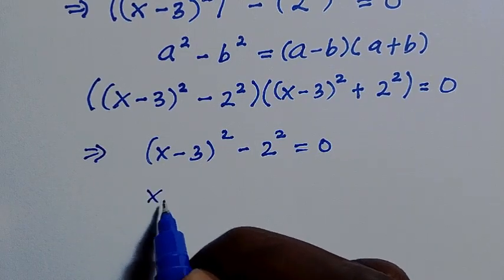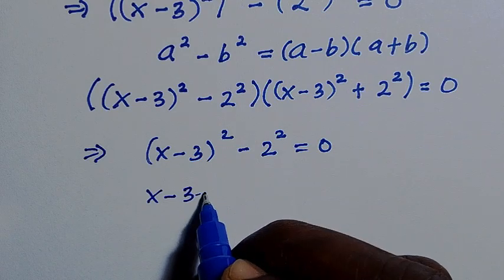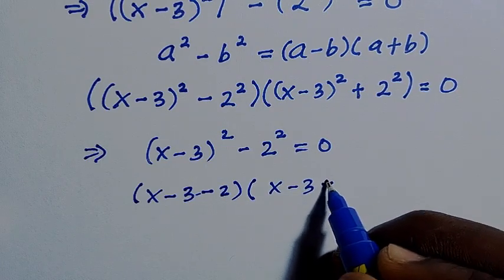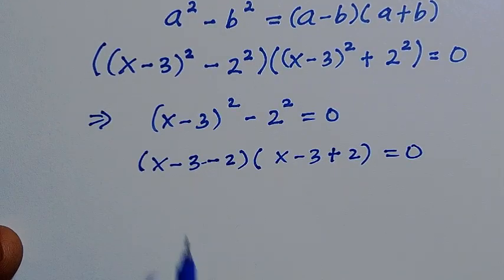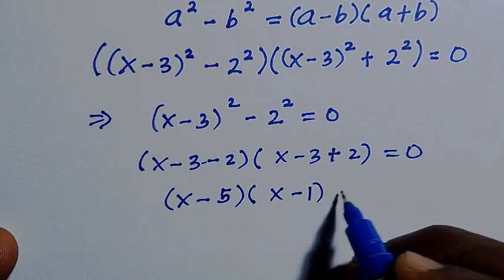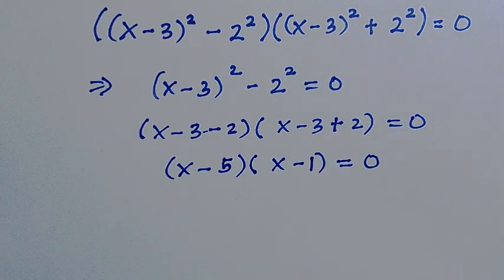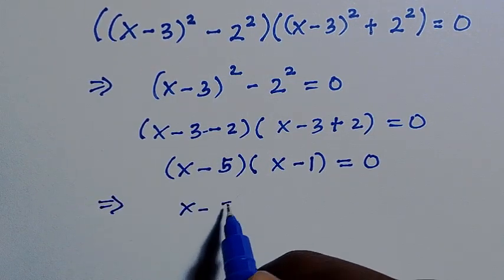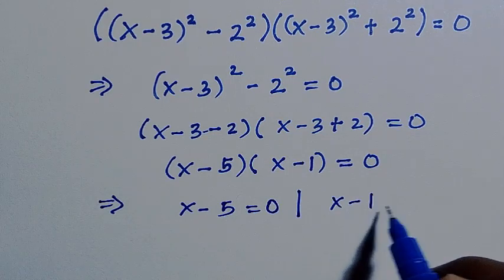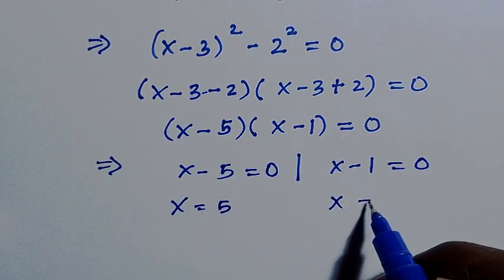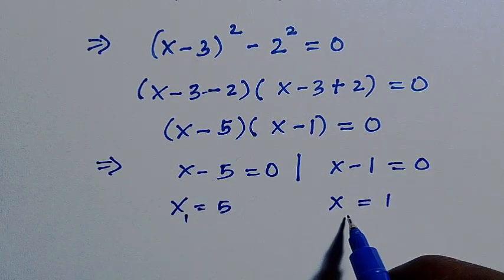We write this as (x minus 3 minus 2) times (x minus 3 plus 2) equals 0, which simplifies to (x minus 5)(x minus 1) equals 0. This is very simple — just like quadratic factoring. We let x minus 5 equals 0 or x minus 1 equals 0, giving us x equals 5 or x equals 1. These are solution 1 and solution 2.